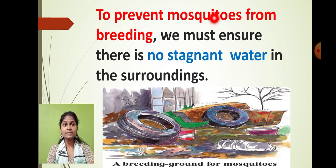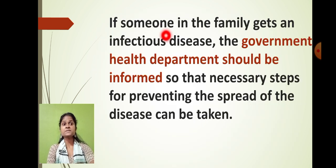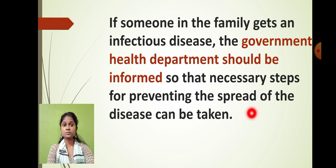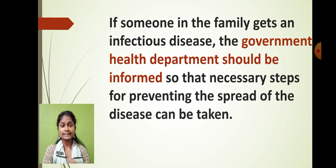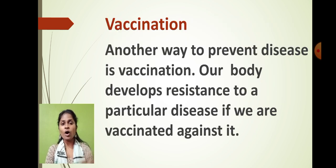To prevent mosquito-borne diseases like malaria and dengue, ensure there is no stagnant water in your surroundings, as mosquitoes breed in stagnant water. If removal is not possible, use insecticide. If someone in the family gets an infectious disease, the government health department should be informed so necessary steps can be taken. For example, if anyone is detected with COVID-19, TMC officials ask for quarantine to protect other family members from infection.